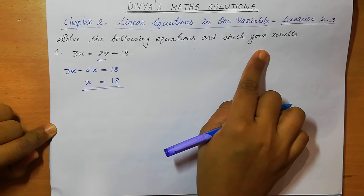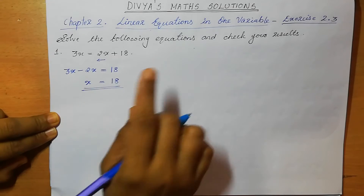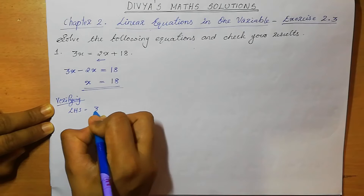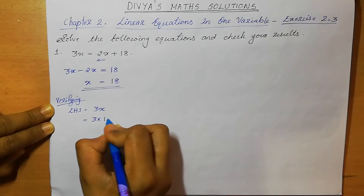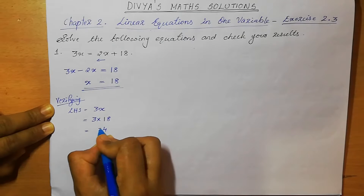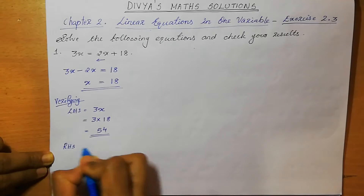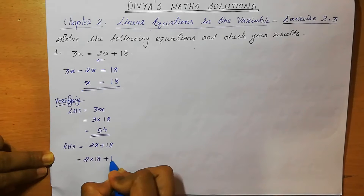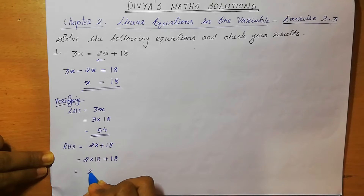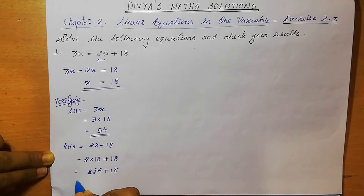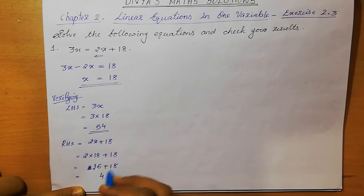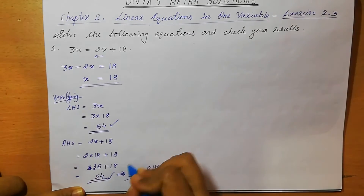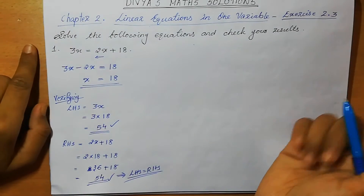Next we need to verify our result — LHS equal to RHS means our answer is correct. LHS = 3x = 3 × 18 = 54. RHS = 2x + 18 = 2 × 18 + 18 = 36 + 18 = 54. From here it is clear that LHS equal to RHS, both are 54. Hence our answer is correct.